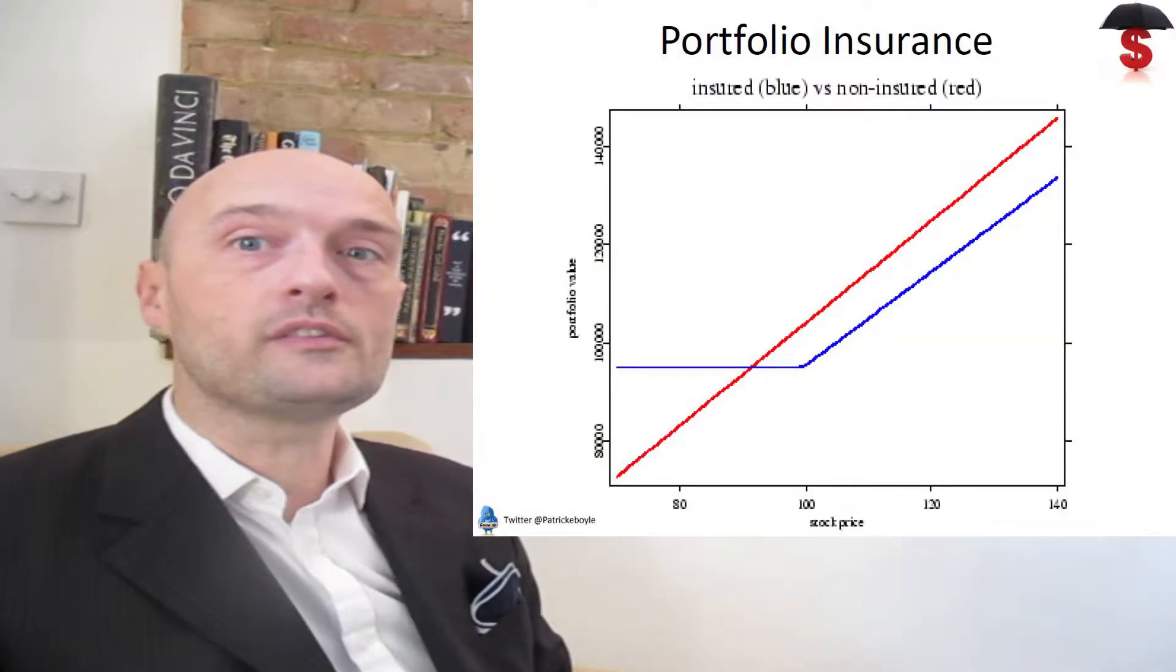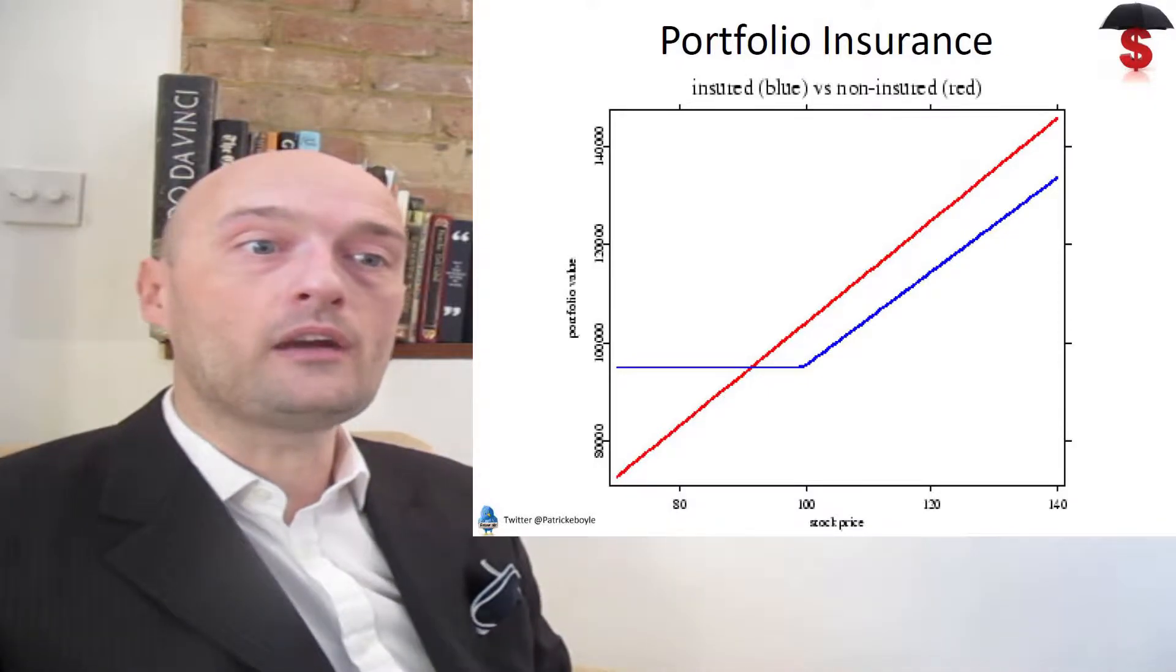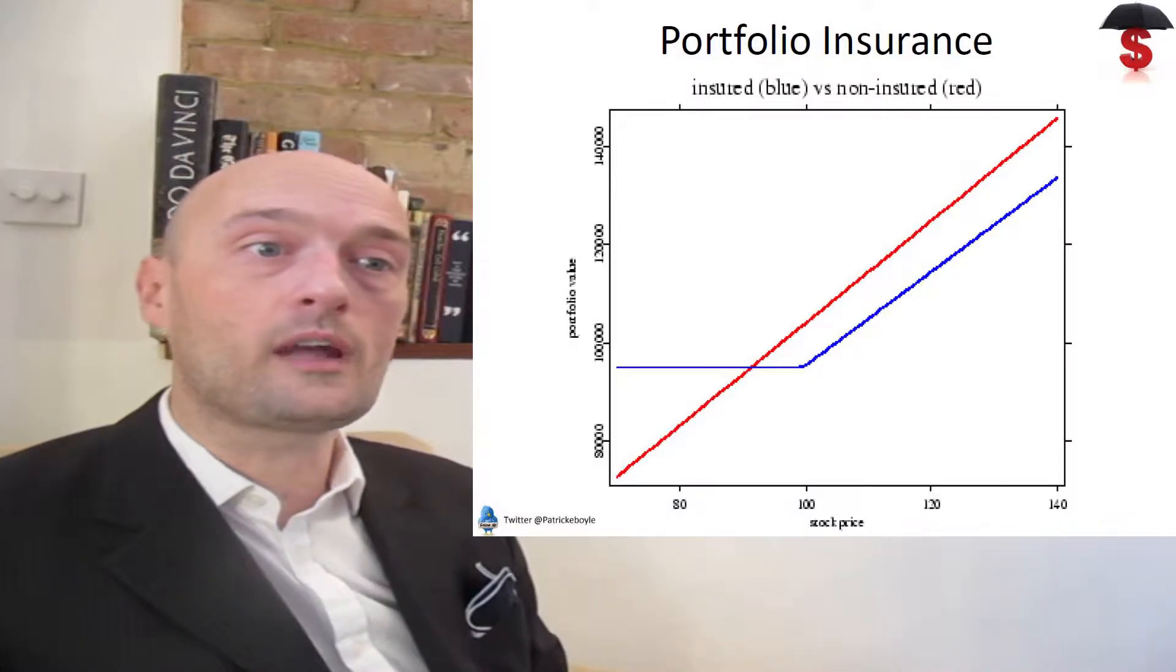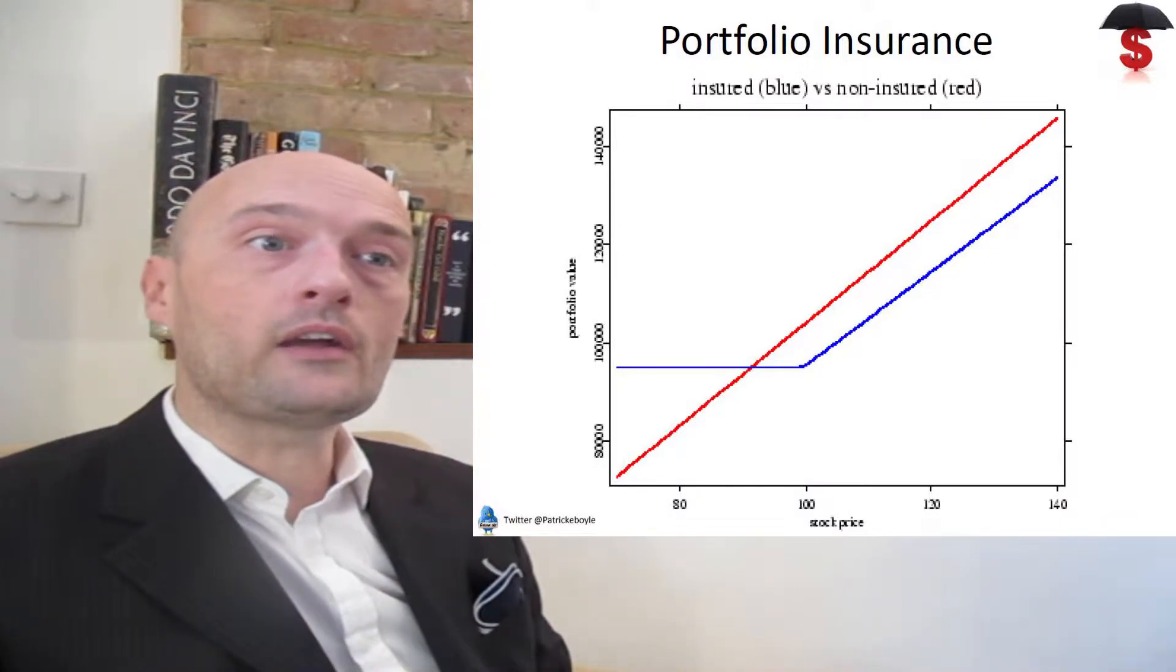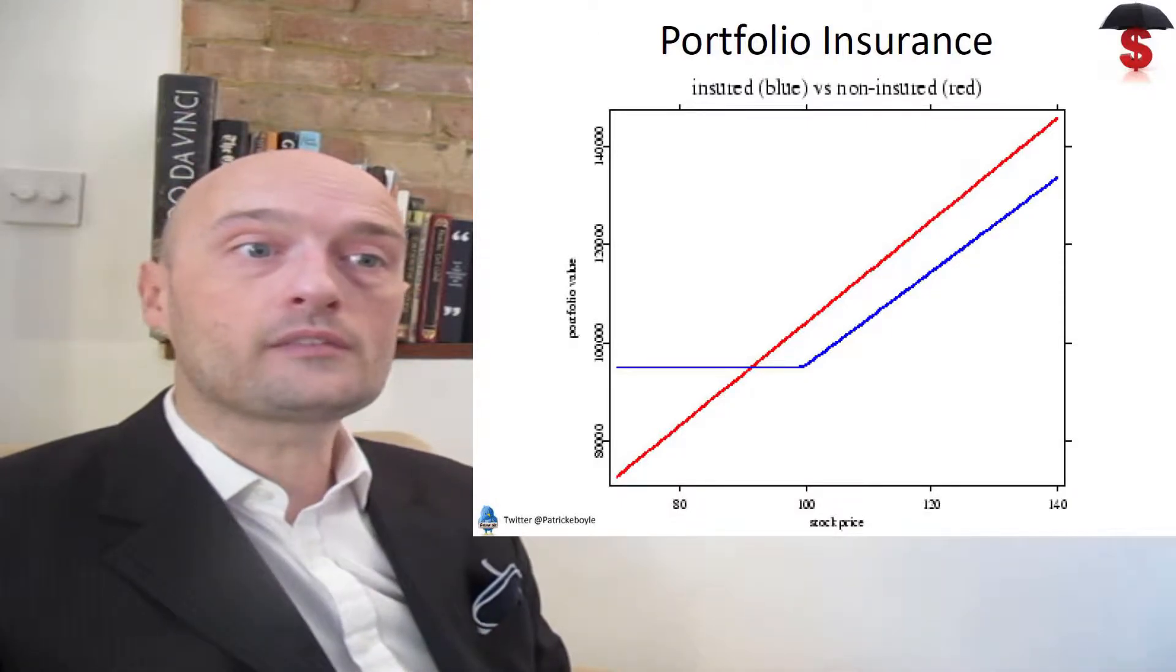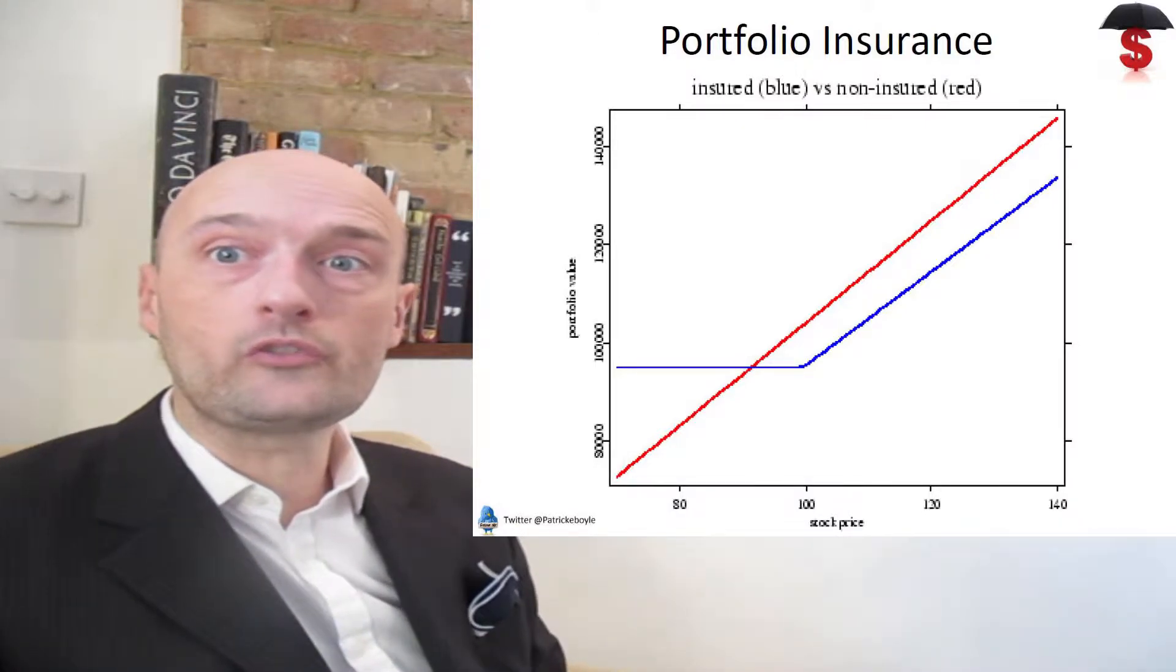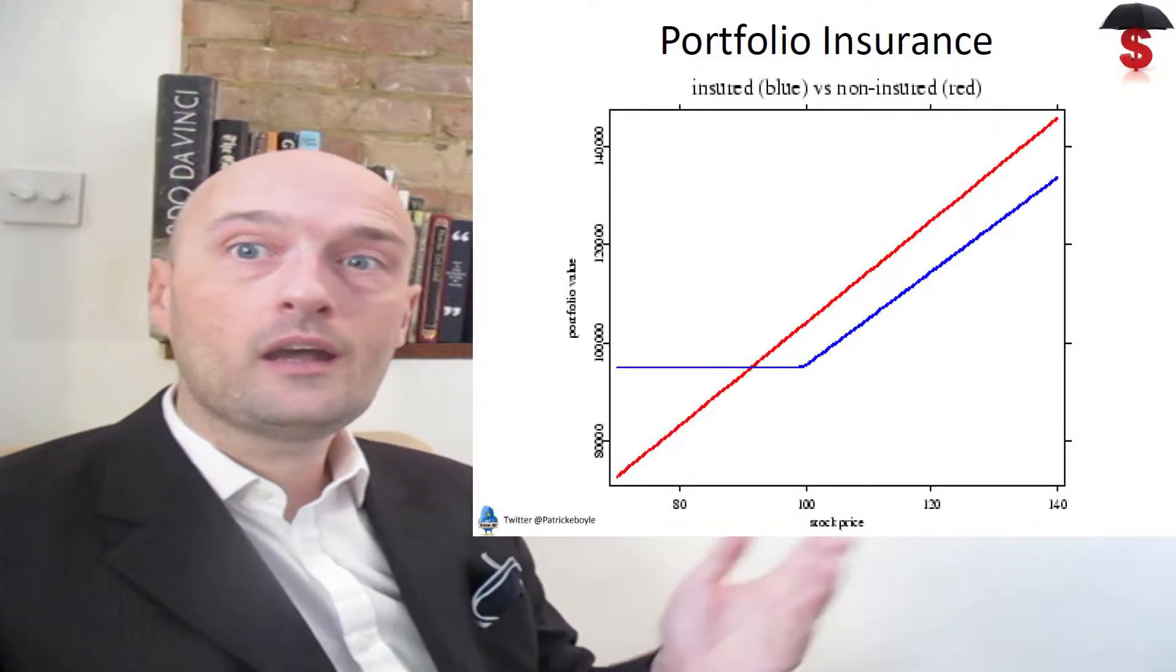As we know from our put-call parity slides, the payoff of an insured portfolio—if the red line that you see on the screen right now is the payoff of being long a stock market index or a basket of stocks, the blue line there is the insured portfolio. That's where you've bought a put on that, so you're long the underlying, long a put, and that gives you the payoff of being long a call option, which comes from put-call parity.